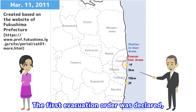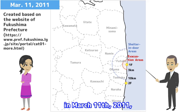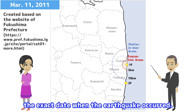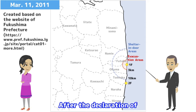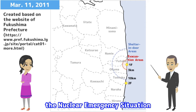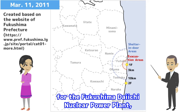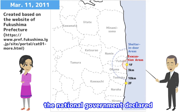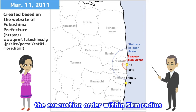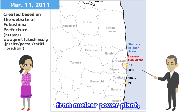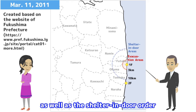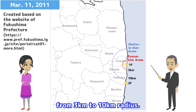The first evacuation order was declared on March 11, 2011, the exact date when the earthquake occurred. After the declaration of the nuclear emergency situation for the Fukushima Daiichi Nuclear Power Plant, the national government declared the evacuation order within a 3 km radius from the nuclear power plant, as well as the shelter-in-door order from 3 km to 10 km radius.